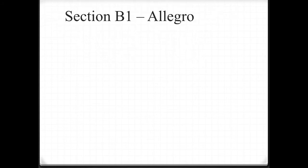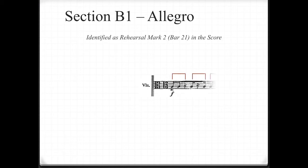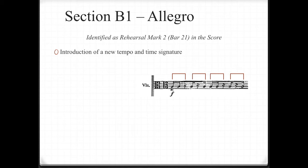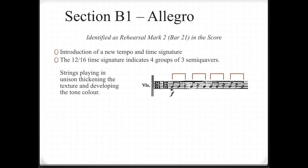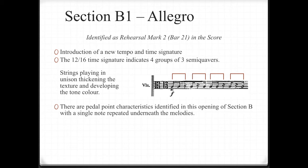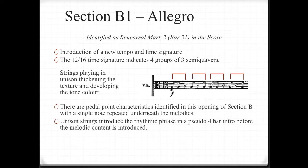Section B1 — the Allegro. It's identified as rehearsal mark 2 or bar 21 in the score. The introduction of a new tempo and time signature occurs. The 12/16 time signature indicates four groups of three semiquavers. Strings playing in unison thicken the texture and develop the tone colour. There are pedal point characteristics in the opening section of B, with a single note repeated under the melodies.